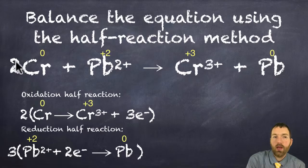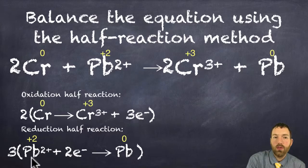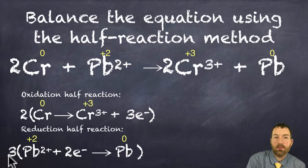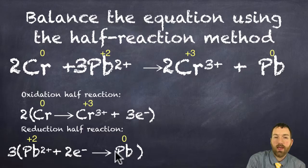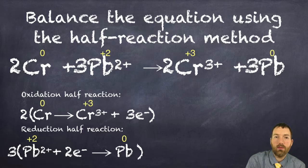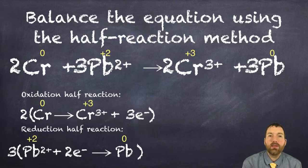Anytime you see a chromium, I'll put a two. A chromium three ion also gets a two. Down at the bottom here, anytime I see a lead two ion, it gets a three. And every time I have a lead atom, it also gets a three. So there's the balanced redox reaction for this equation.